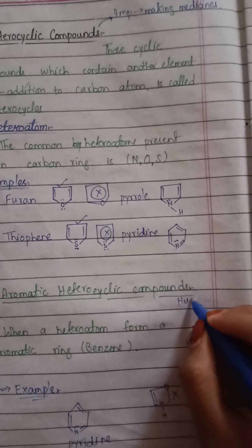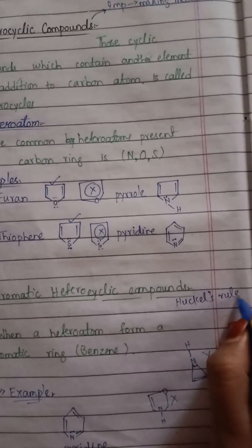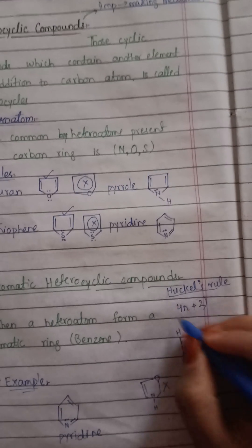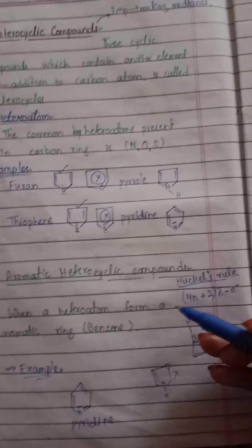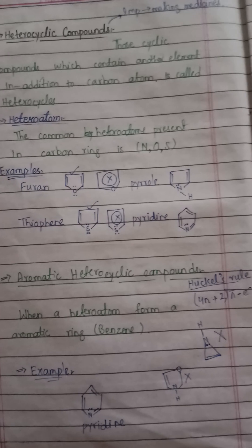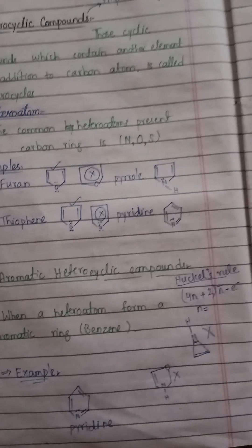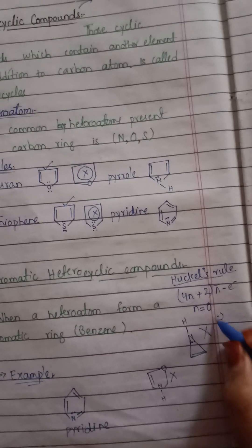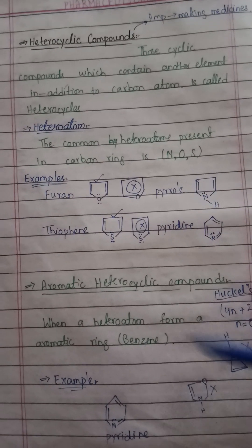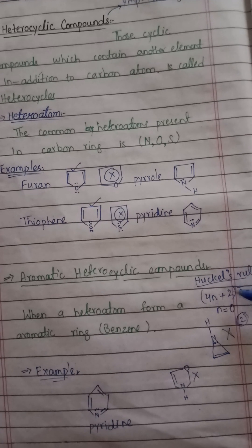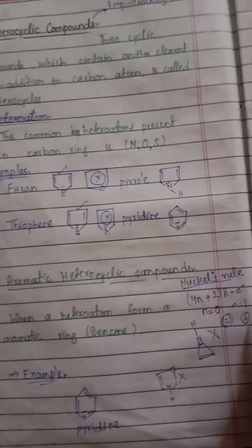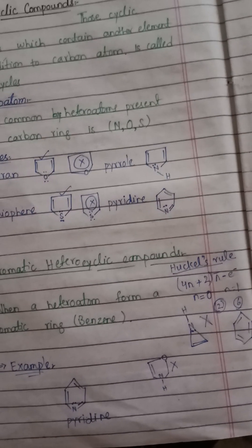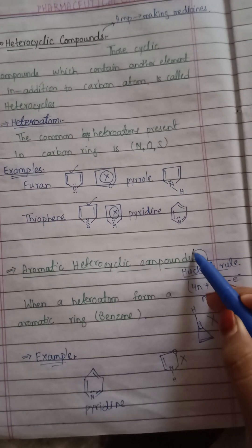Aromatic heterocyclic compounds follow Hückel's rule. The formula to determine whether a compound is aromatic is 4n + 2 pi electrons. For example, if n = 0 we get 2, and if n = 1 we get 6 — which corresponds to a benzene-like structure with 6 pi electrons. So Hückel's rule allows us to determine if a compound is aromatic or not.